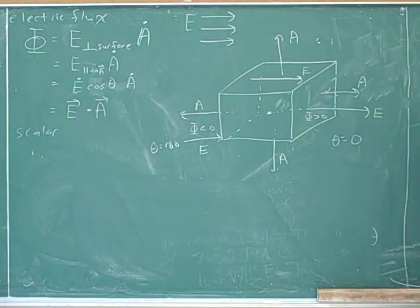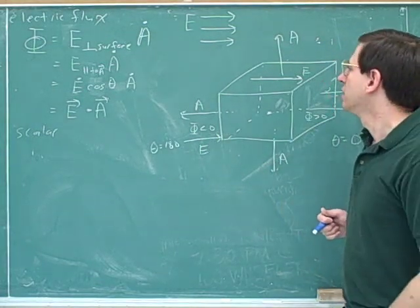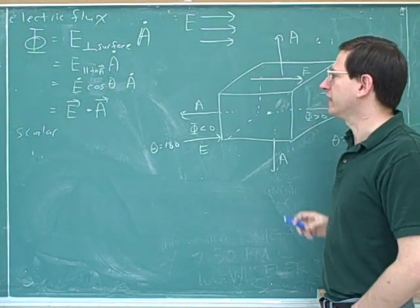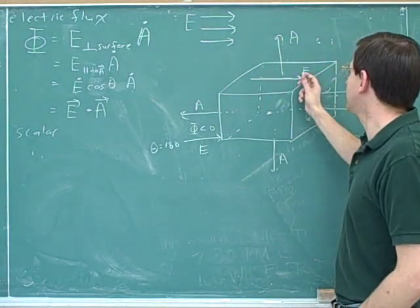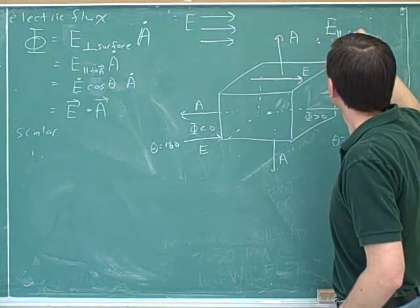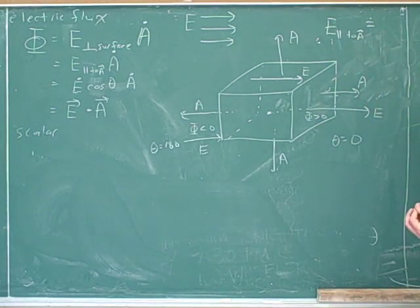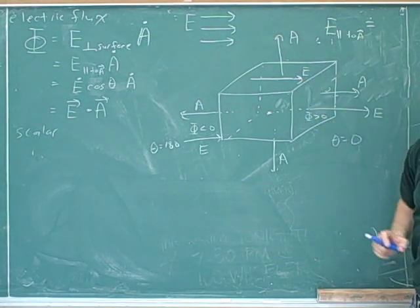I'm not sure. Would it be zero? Yeah, that's right. Again, you didn't sound too confident, but that's exactly right. Remember that we only want to take the component of the electric field that is perpendicular to the surface, or equivalently, we only want the component of the electric field that is parallel to A. But what is the component of E that is parallel to A?